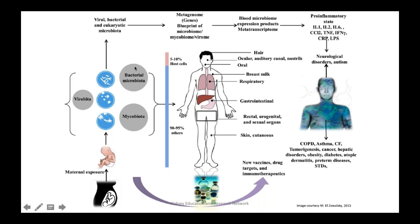How does this happen? The microbial community — fungi, bacteria, viruses — starts from the time of maternal exposure, and over a period of time they evolve to form the viral, bacterial, and eukaryotic microbiota, and we study them by studying their genes. The products of these microbes circulate and their expression products, or transcripts, are often called the metatranscriptome — meaning information associated with the transcriptome.